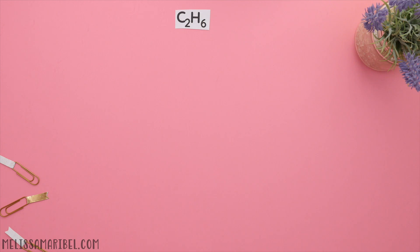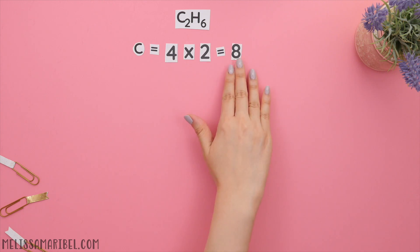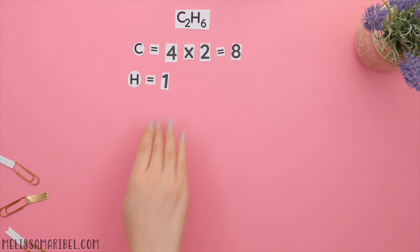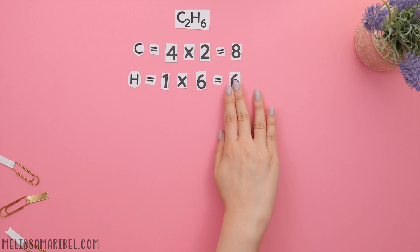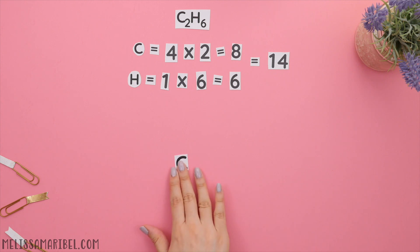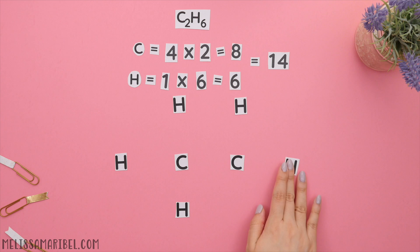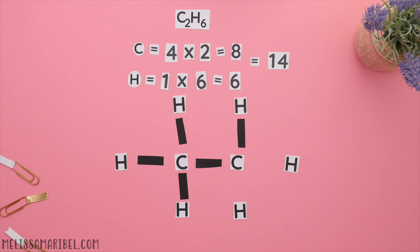Here's the first one. We'll identify the total valence electrons: carbon has four valence electrons times two, so eight. Hydrogen has one valence electron times six, so six. Eight plus six is fourteen valence electrons. Both carbons will be our central atoms and each will be surrounded by three hydrogens. Everything is bonded together, so we'll place our single bonds and count up all the valence electrons to make sure we have fourteen total. Remember, each single bond counts as two electrons: two, four, six, eight, ten, twelve, fourteen. Check.